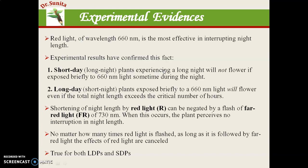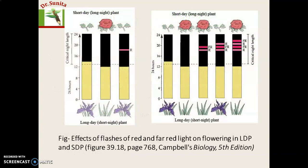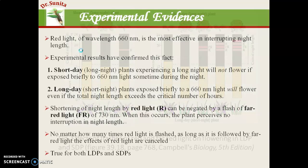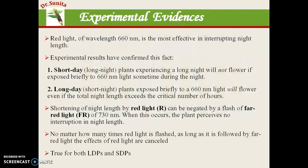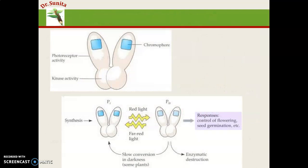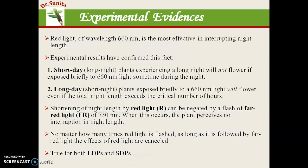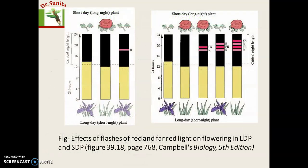Experimental evidence shows: a short day plant experiencing a long night will not flower if exposed to 660-nanometer red light at some point during the night. Short day plants need a continuous, uninterrupted long night to flower.